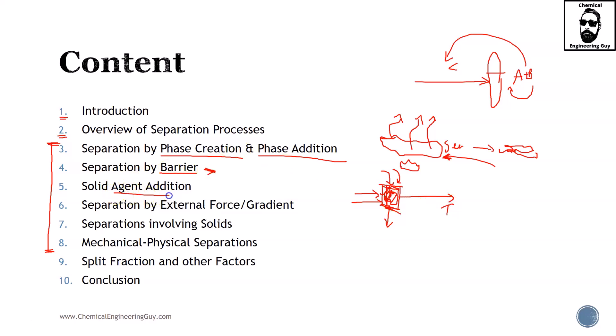Solid agent addition can be adsorption. We're going to cover that process later on. We also have section 6, which is separation by external force or gradient. This can be done either by centrifugation, sedimentation will be one example,